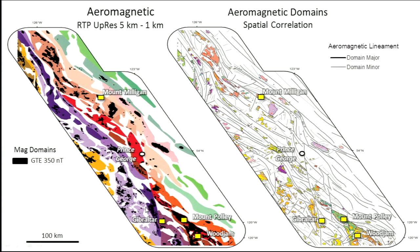To the left you can see the different magnetic domains populated by different characteristics extracted from the grids. In black I extracted high-intensity magnetic units — in this case greater than or equal to 350 nanoteslas — which worked best for the interpretation. Using that, I clipped the BCGS geology in order to get an idea of where those sources are coming from. In most cases they correspond to Triassic basalts, Nicola Group mainly here to the south, and in the northern part to those Jurassic intrusives and basalts.